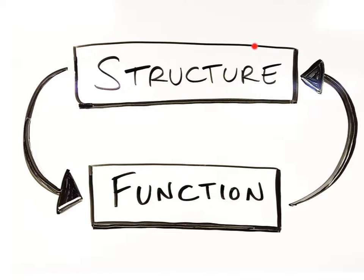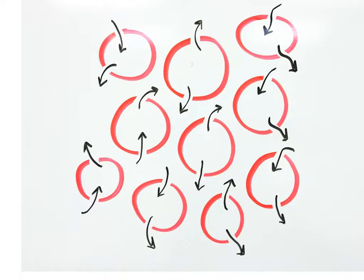There is a strong relationship between structure and function in the life sciences. One can often look at a body's structure and begin to understand its function, how it works. Take, for example, the walls of the blood capillaries. They are very thin to allow for the efficient exchange of gases, wastes, and nutrients between the blood and the body tissues. They also contain pores and clefts between their cells to better enhance this exchange.